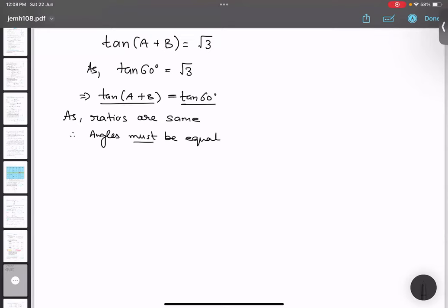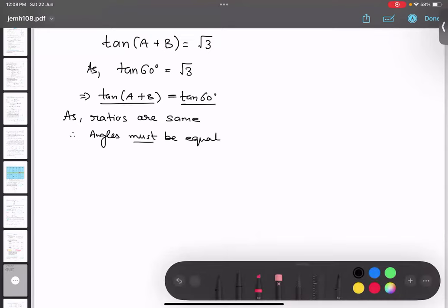It is only because ratios are same and angles also. So therefore A + B equals 60 degree, so this is my first equation. Any doubt in the first equation?